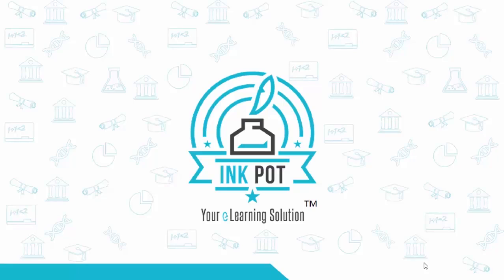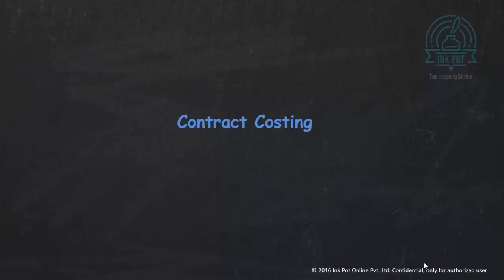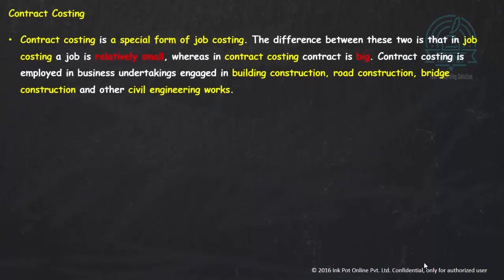Welcome to this video. We are going to start with a new chapter: contract costing. Contract costing is a special form of job costing. The main difference between job costing and contract costing is size — where big jobs are involved, requiring considerable length of time to complete, and comprising activities done outside the factory area, that is known as contract costing. In job costing, the work is small and done within the factory area.